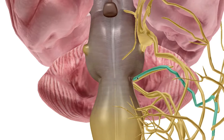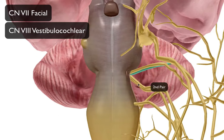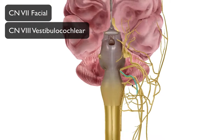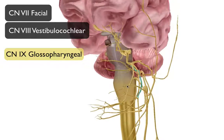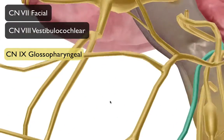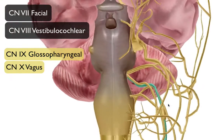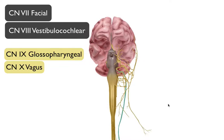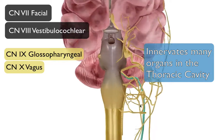The most anterior pair consists of the facial nerve and the vestibulocochlear. The second pair is nine and ten — the glossopharyngeal and, just posterior to it, cranial nerve ten, the vagus nerve. The vagus nerve is one of the more extensive of the twelve and you can see it travels quite a way down.